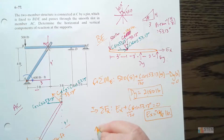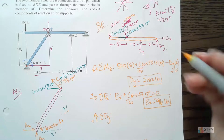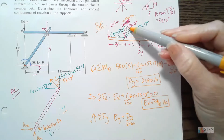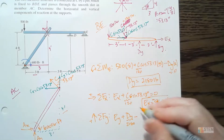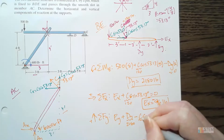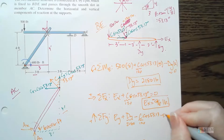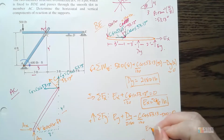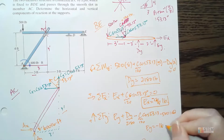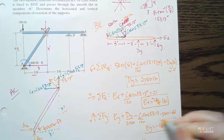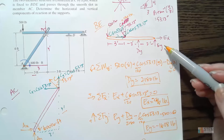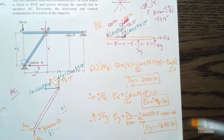For the Y direction, we have positive EY plus DY (2,180) minus C cos(53.13°) with C = 120, minus 500, set equal to zero. Solving for EY gives −1,608 pounds. The negative means we assumed the wrong direction in our diagram, but we leave the diagram as is — it still corresponds correctly to these negative values.